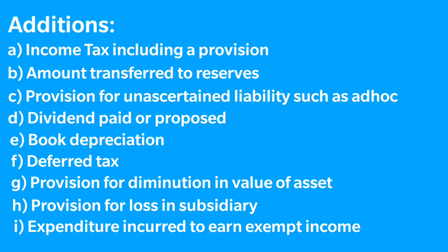We also add back a provision made for diminishing the value of an asset, for example a provision made for bad and doubtful debts. Similarly, we add back a provision made for losses in subsidiaries including an actual loss in subsidiary, and any expenditure incurred for earning exempt income under section 10, 11, or 12.